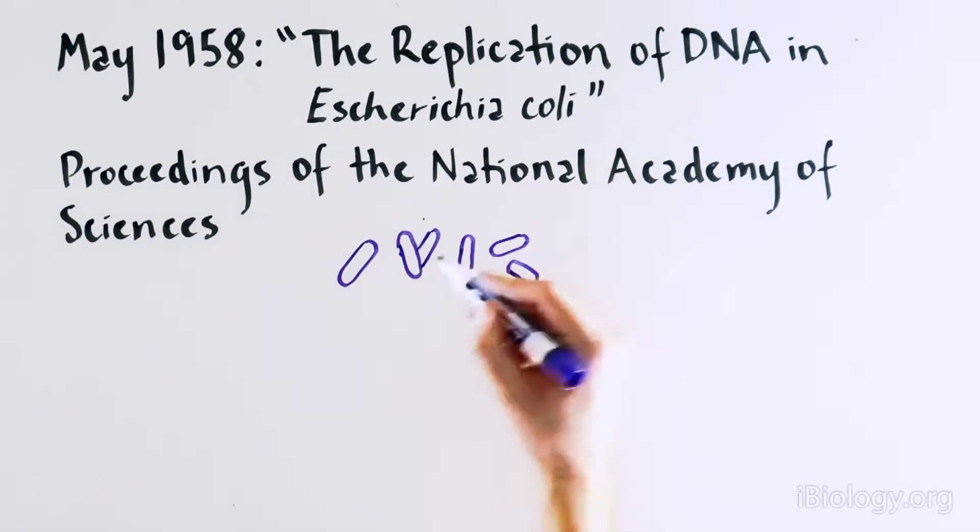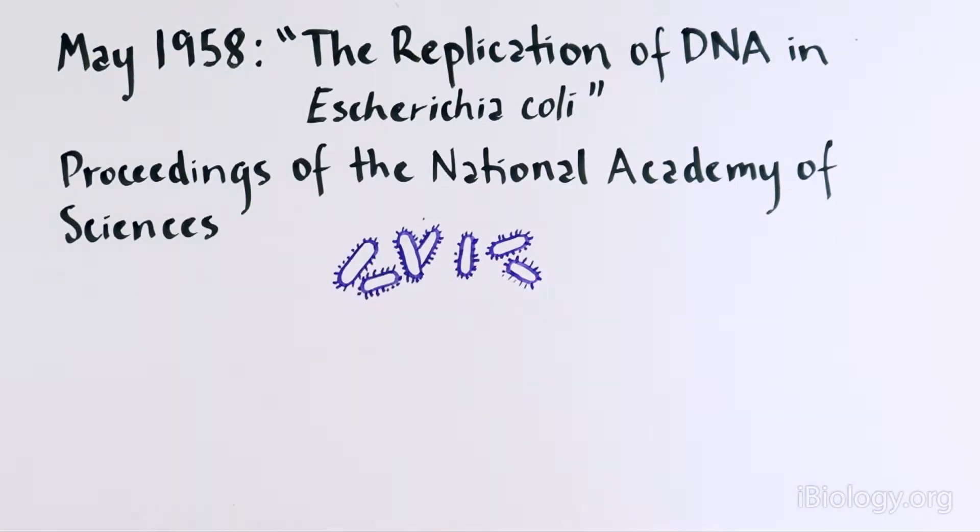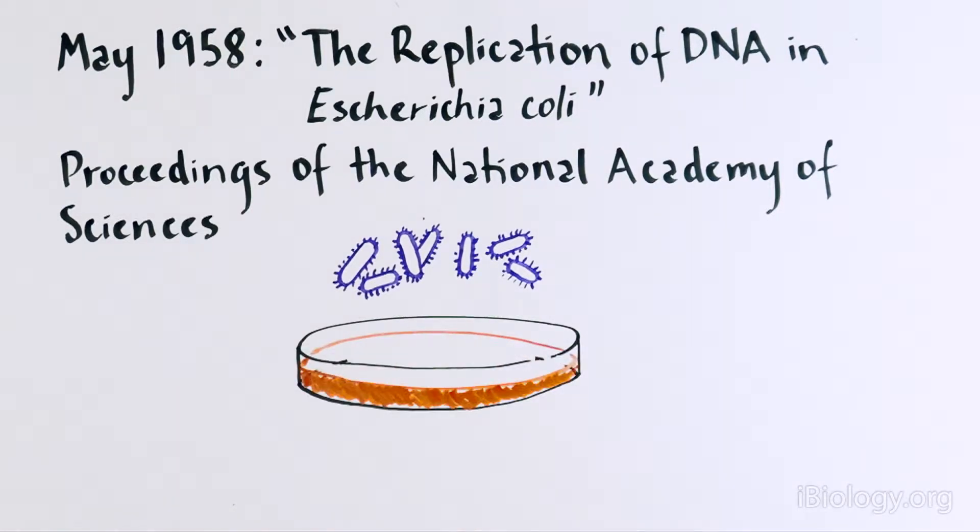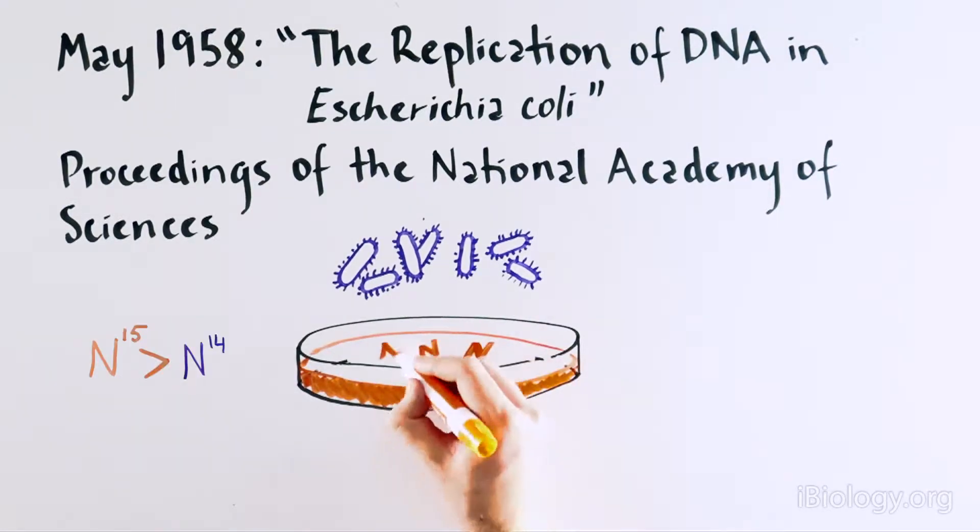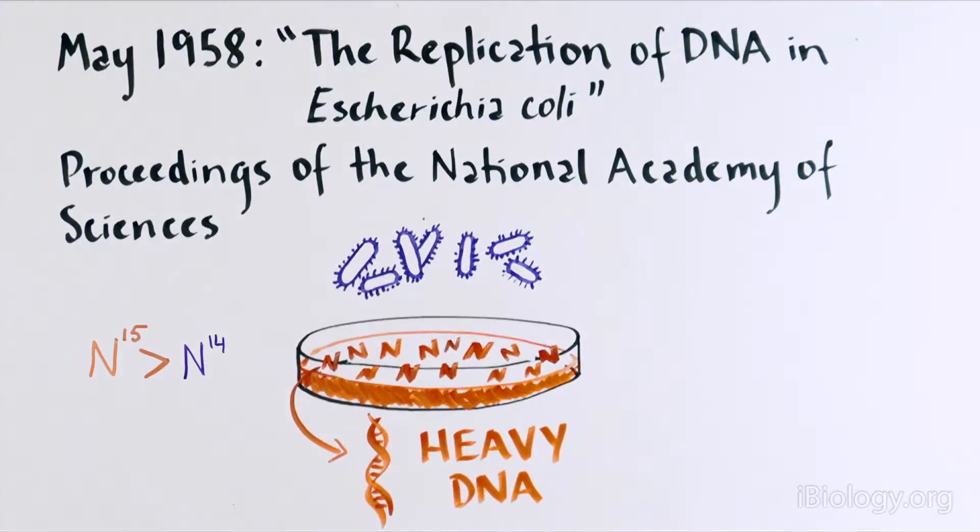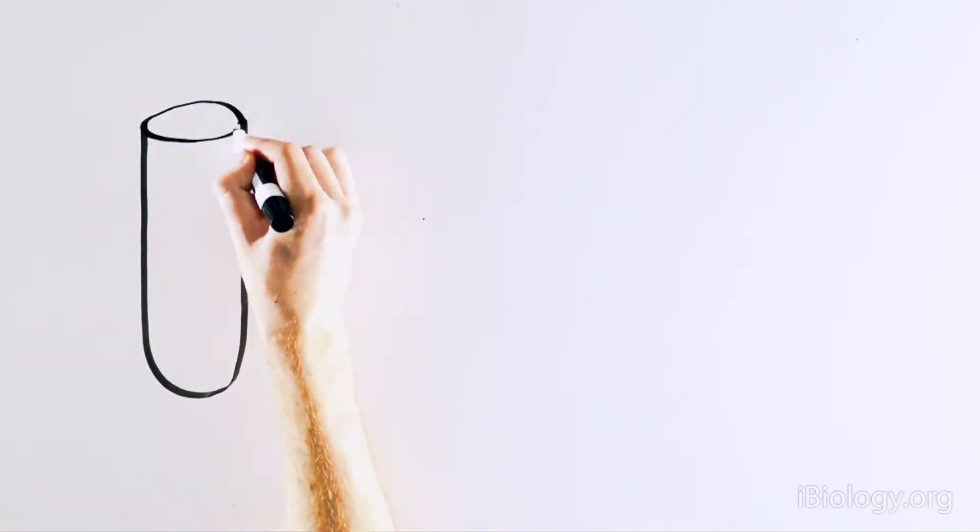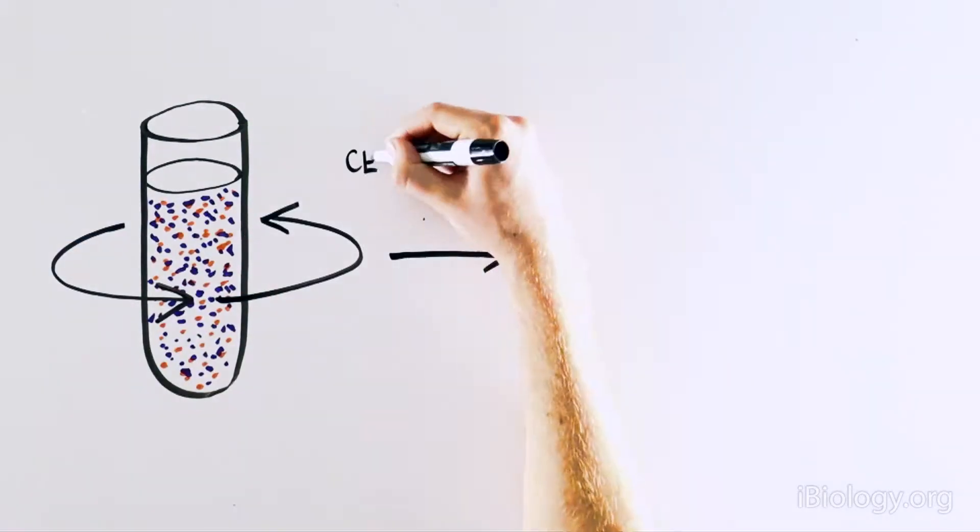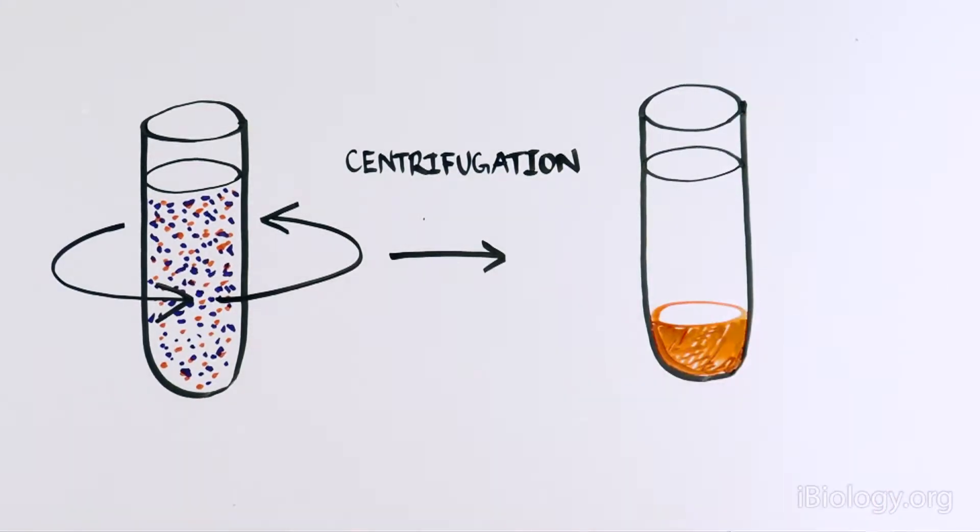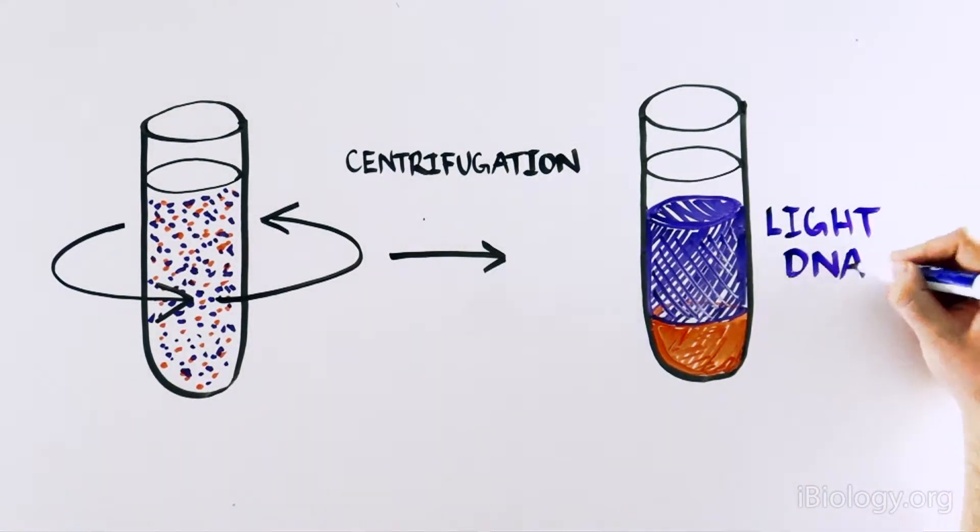These scientists used bacteria to answer the question of DNA replication, since it could be easily grown in the laboratory. They grew the cells in the presence of a specific type of nitrogen, which is found in DNA, that would make all of the DNA very heavy. They used centrifugation, which can separate things according to their weight. Initially, all of the DNA in the cell was heavy and was at the bottom of the tube, since it was grown in heavy nitrogen.